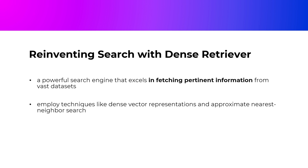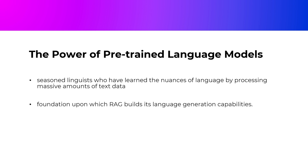The Power of Pre-Trained Language Models. RAG harnesses the power of pre-trained language models like BERT, GPT, or T5. These models are like seasoned linguists who have learned the nuances of language by processing massive amounts of text data. They understand the context, grammar, and semantics of language, making them invaluable to the RAG process. The pre-trained language models are the foundation upon which RAG builds its language generation capabilities, enabling it to craft responses that are not only accurate, but also fluent and contextually aware.